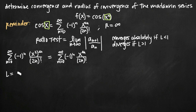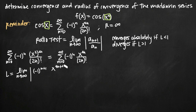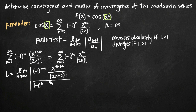We'll say L equals the limit as n goes to infinity. Plugging in n+1 everywhere we have n, we get negative 1 to the n+1, times x to the 4n+4 (since 4 times (n+1) = 4n+4), all divided by (2n+2) factorial, because 2 times (n+1) = 2n+2. All of that is divided by our original series: negative 1 to the n times x to the 4n, over 2n factorial. We take the absolute value of that.